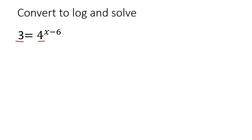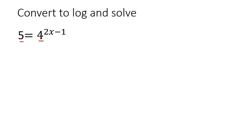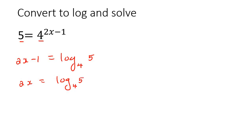These two numbers could never be the same, so you take the exponent, make it equal to log of the base and then the other number. To get x by itself, it would be log base 4.3, then add 6. If you solve that, you should get 6.79 to two decimal places. For the next one, you can't get these numbers to be the same, so use log. You take the exponent, make it equal to log of the base and the other number, giving you 2x equals log base 4 of 5, then add 1. Divide everything by 2 to get x alone, and you should get x equals 1.08.